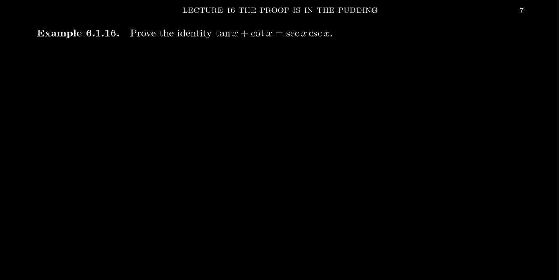Consider the following identity we have to prove: tangent x plus cotangent x equals secant x times cosecant x. So adding together tangent and its complement is the same thing as multiplying together secant and its complement. We have to pick one side of the equation to work with. I'm going to pick the left-hand side, mostly because addition is more complicated than multiplication when it comes to proving trigonometric identities. We have tangent of x plus cotangent of x, and we want to make that into a product. The way I'm going to do that is to make these things fractions.